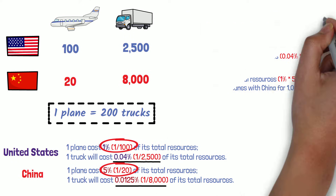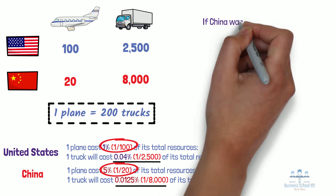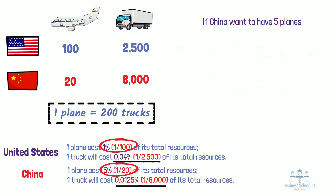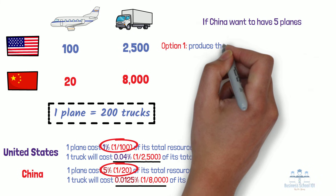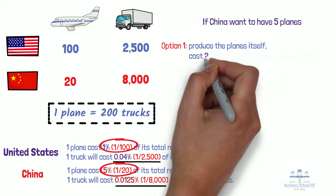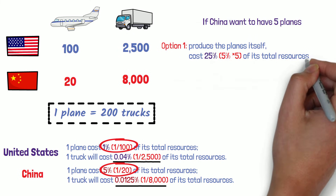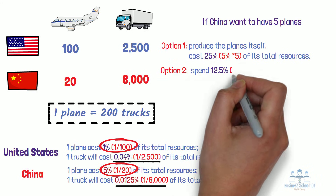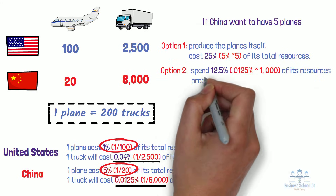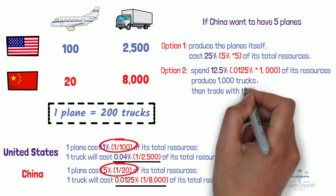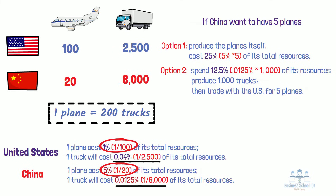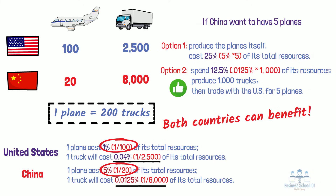Now, how can China also benefit from this trade? If China wants to have 5 planes, it also has two options. Option 1: China decides to produce the planes itself, which will cost 25% of its total resources. Option 2: China spends 12.5% of its total resources to produce 1,000 trucks, and then trades those trucks with the U.S. for 5 planes. China also benefits from the trade by saving half of its resources. By studying these examples, we now can understand that both countries can benefit from trading by specializing in the production of goods in which each country has an absolute advantage.